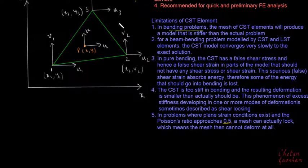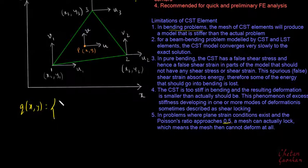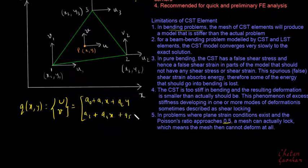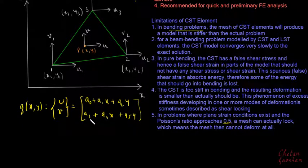To begin the derivation: since this is a constant strain triangle element, it is a two-dimensional linear element. For a two-dimensional linear element, we assume a linear displacement function. So u(x, y) is assumed as a₀ + a₁x + a₂y, and v is assumed as a₃ + a₄x + a₅y, where a₀ represents a rigid body motion of the element, as discussed in previous videos.